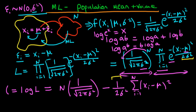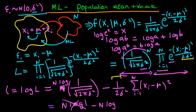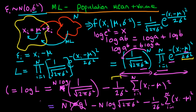Simplifying further — noting that there should be a log in front of the parenthetical term — and applying log rules: log(1) equals zero so that term disappears, giving us n times log(1) minus n times log(√(2πσ²)) minus (1 over 2σ²) times the sum from i equals 1 to n of (xᵢ − μ)². So now we have our log-likelihood in a clean form.